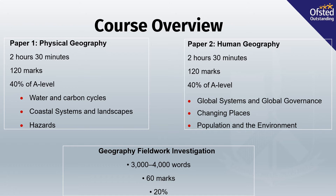Paper 2 is your human geography paper, which is worth the same amount of marks, the same duration, and the same percentage of your total A-Level. At the beginning of year 12 you will study global systems and global governance. After Christmas, you'll study changing places. And finally, the slightly larger unit in year 13 is population and the environment.